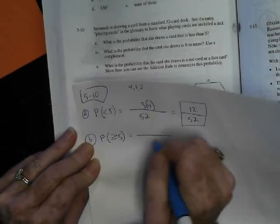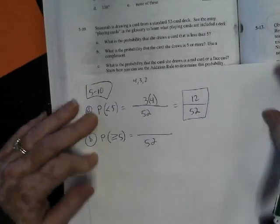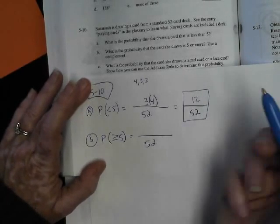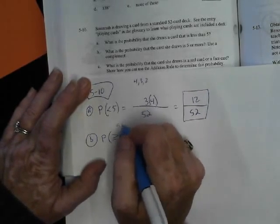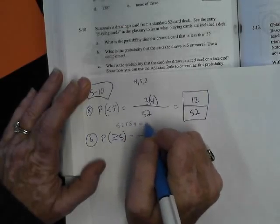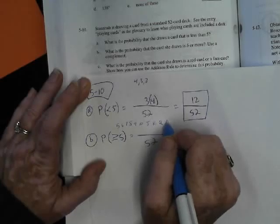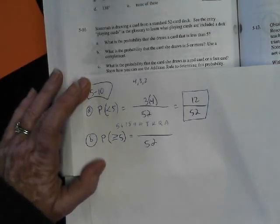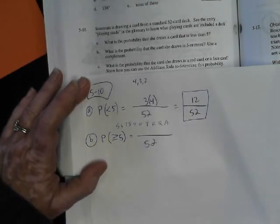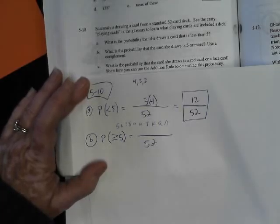5 or more. I know there's 52 cards. 5 or more. So, that would be like 5, 6, 8, 9, 10, Jack, King, Queen, and we said Ace because Ace wasn't a low card, right? I guess. Yeah. So, did we get all of them? 5, 6, 7, 8, 9, Jack, King, Queen, Ace. Is there anything else?